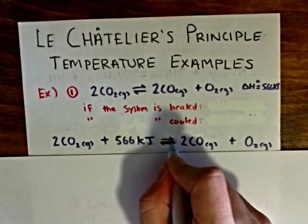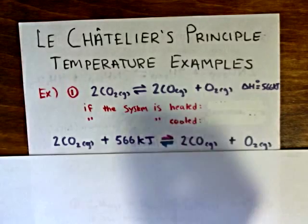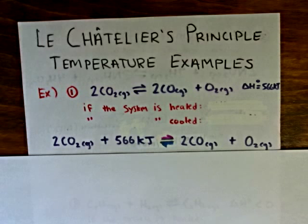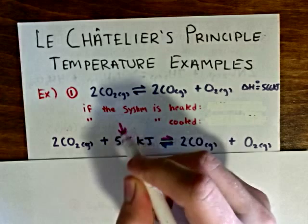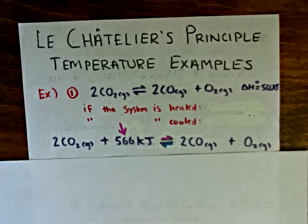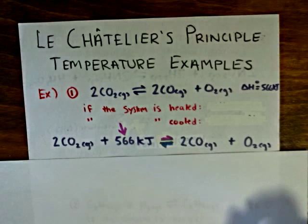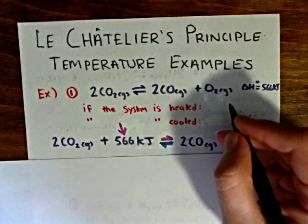I color the bottom arrow blue and the top arrow red. To answer the question: if the system is heated, I draw a red arrow pointing in the direction of the energy term — towards it — representing adding more warmth. Referring back to the equilibrium arrows, whichever direction the red equilibrium arrow is pointing is the direction the equilibrium will shift if heated. So if this equilibrium is heated, it will shift to the right.